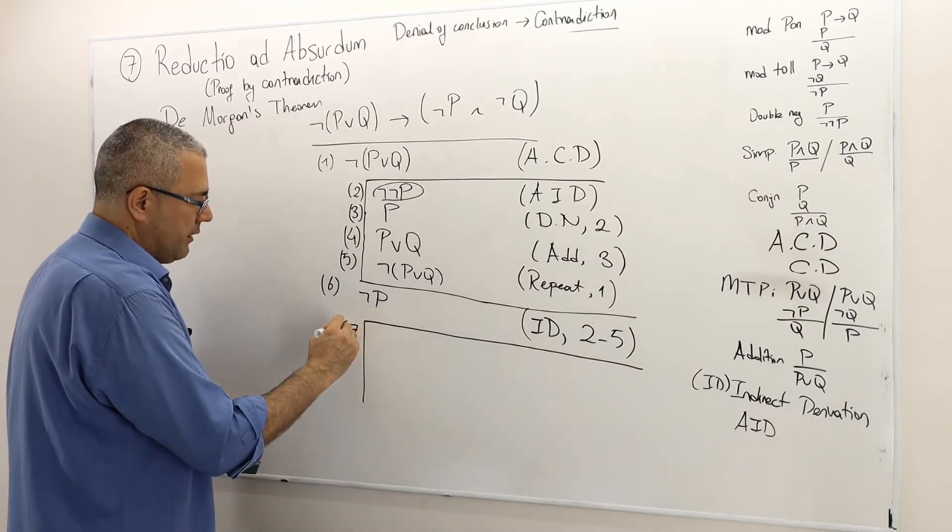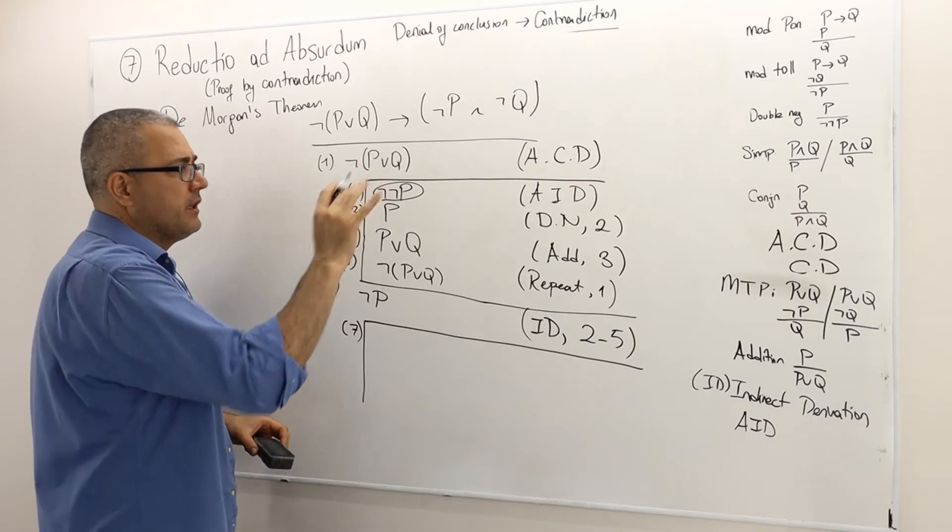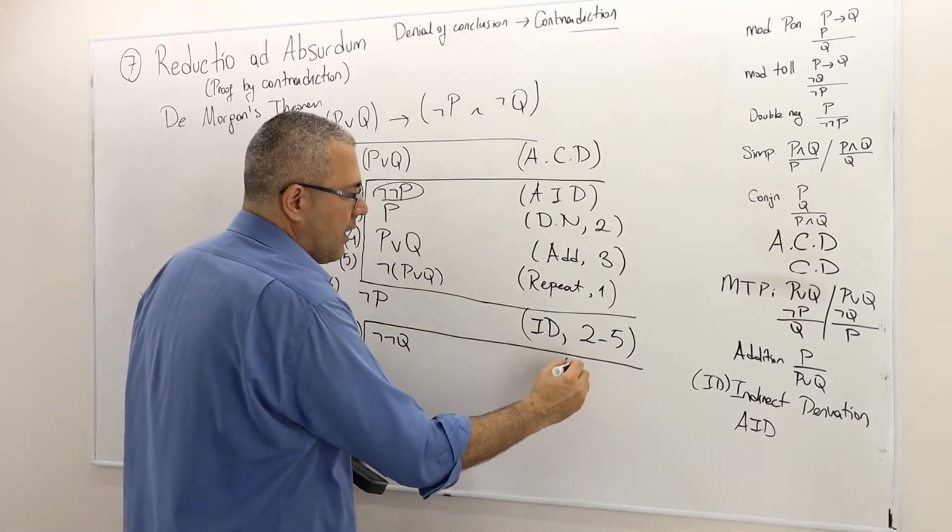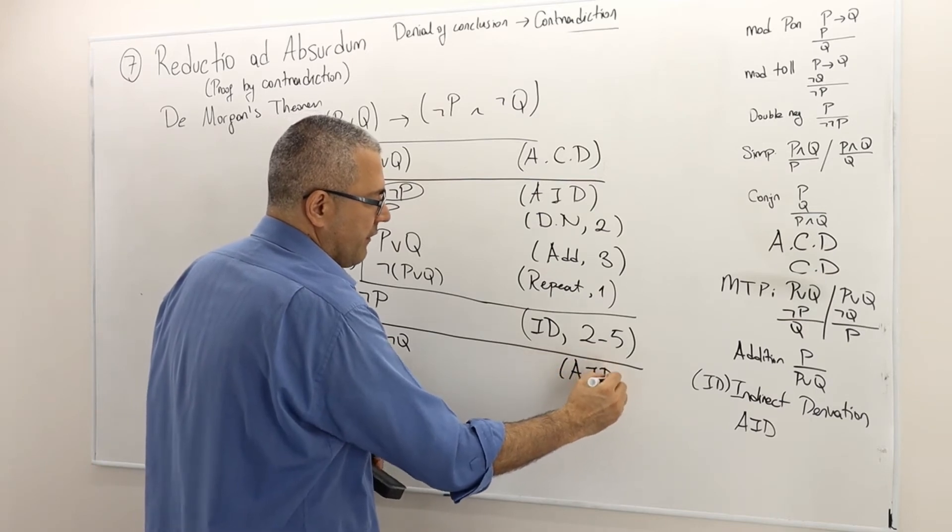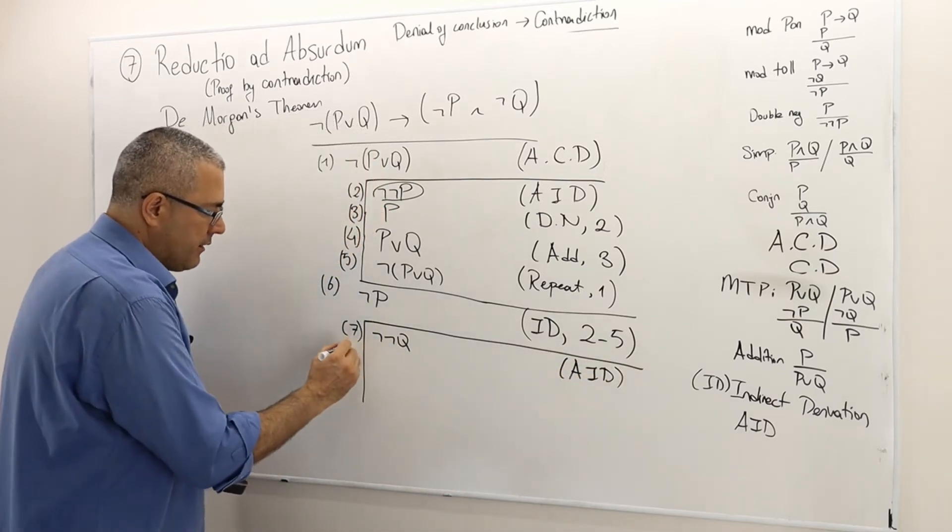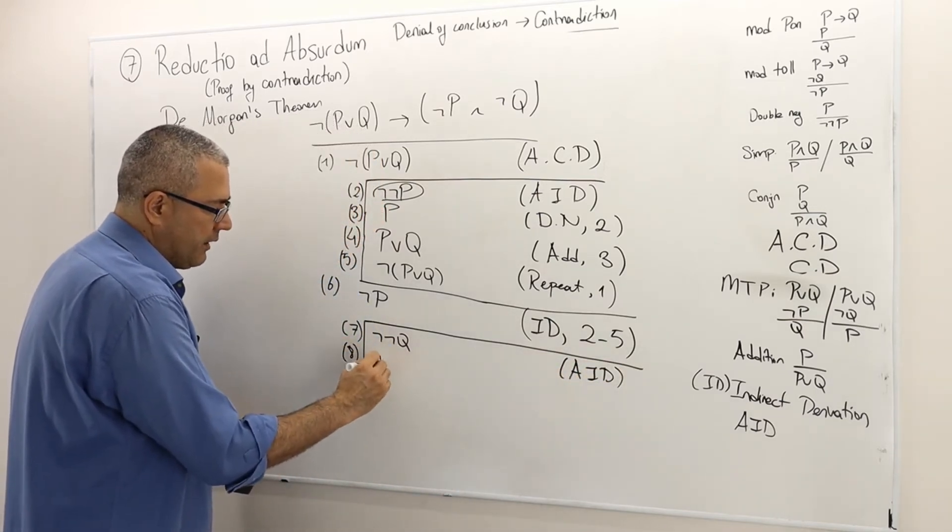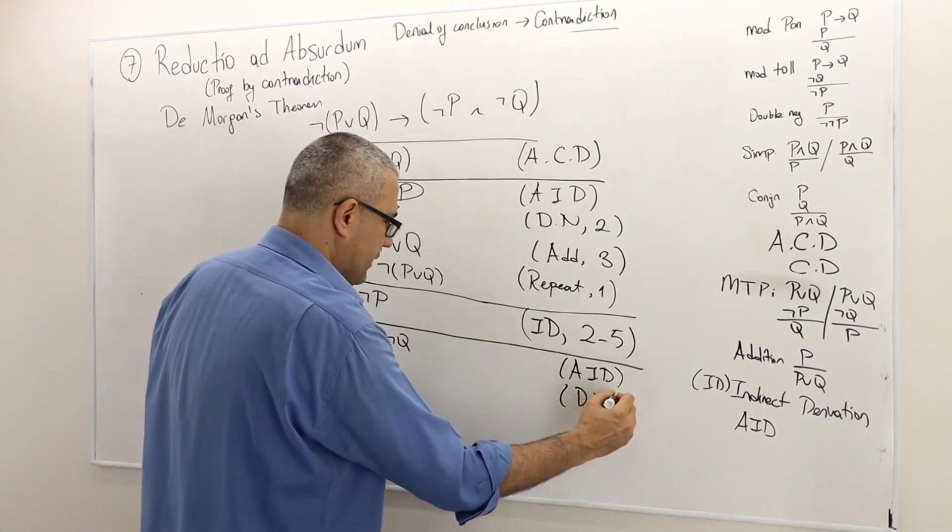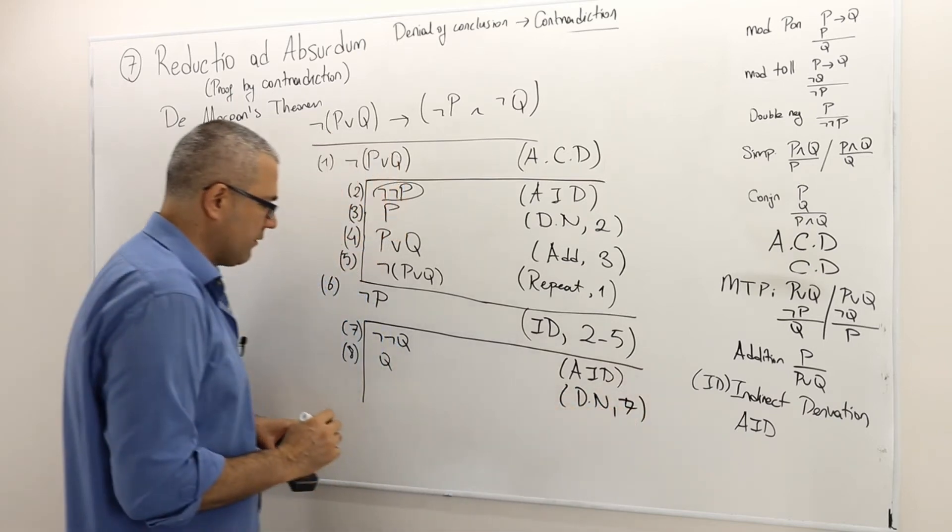So what am I going to do? I'm going to open a new box. So it's going to be line seven. I'm going to deny my conclusion: not not Q. So assumption for indirect derivation. Again, not not Q means Q because this is nothing but double negation of the argument in line seven.